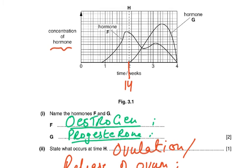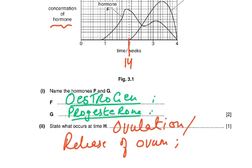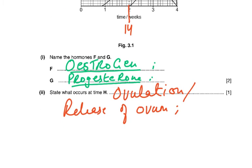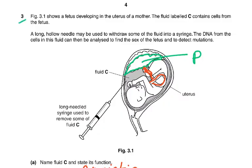Underlined words mean they are essential marking scheme points — you couldn't use anything else. State what occurs at time H: that is ovulation. If you didn't remember the word ovulation, you could say 'release of the ovum' or 'release of the egg.'